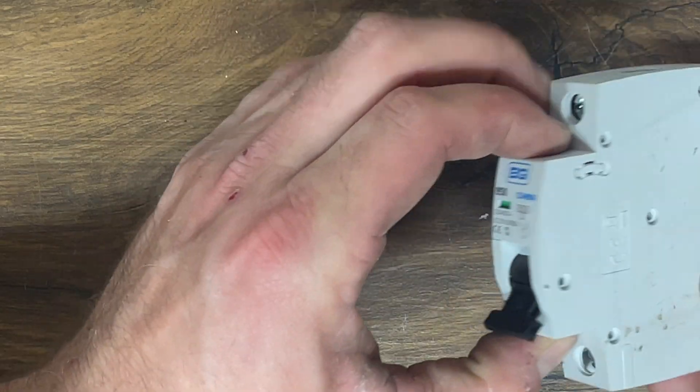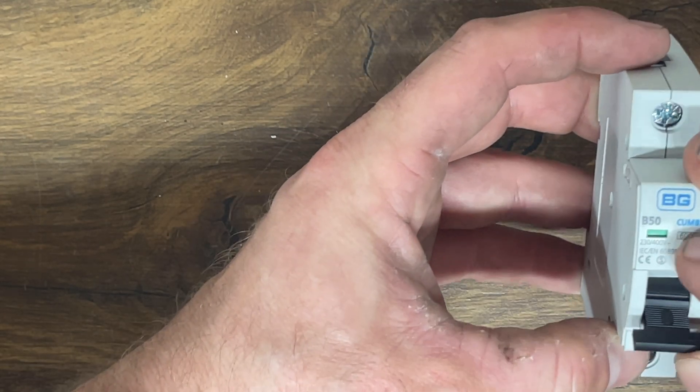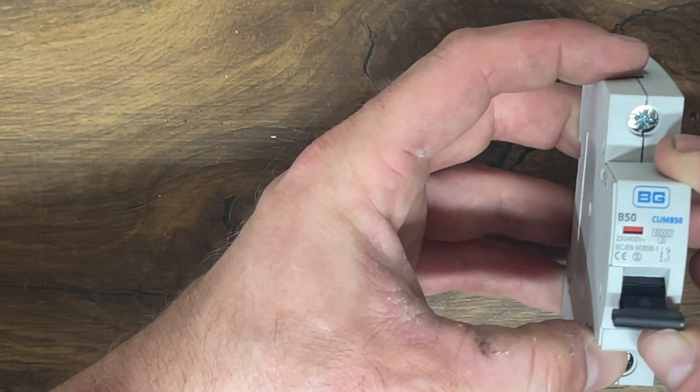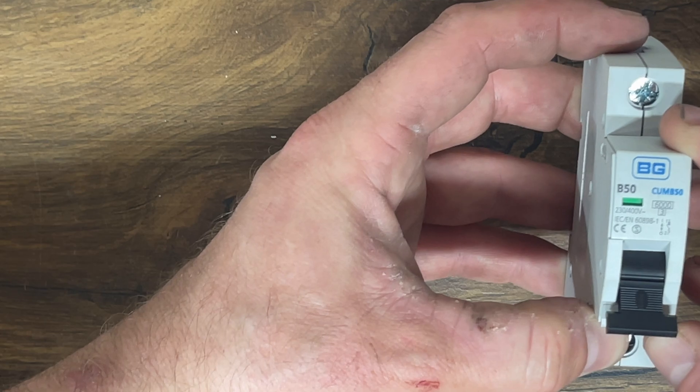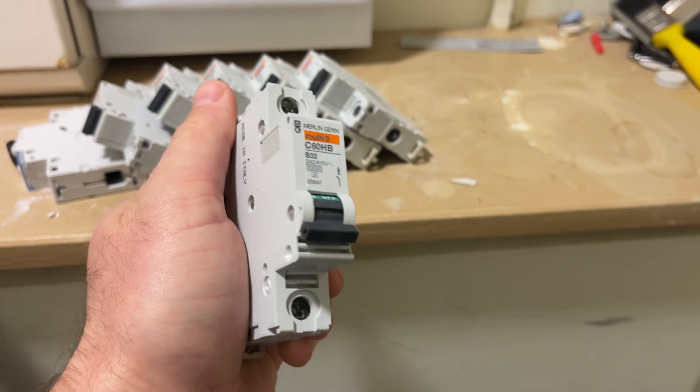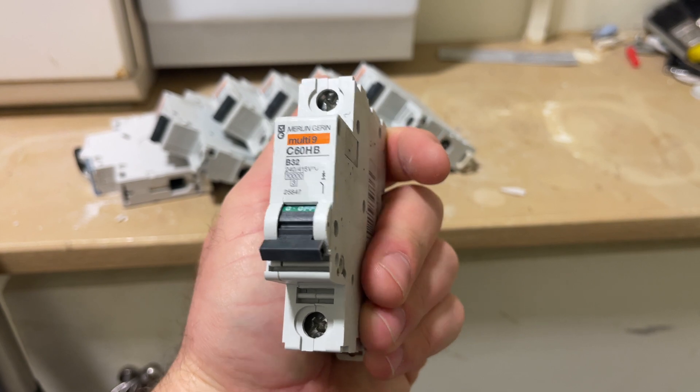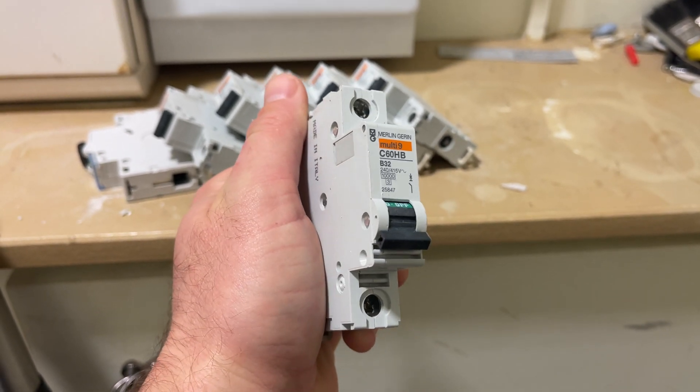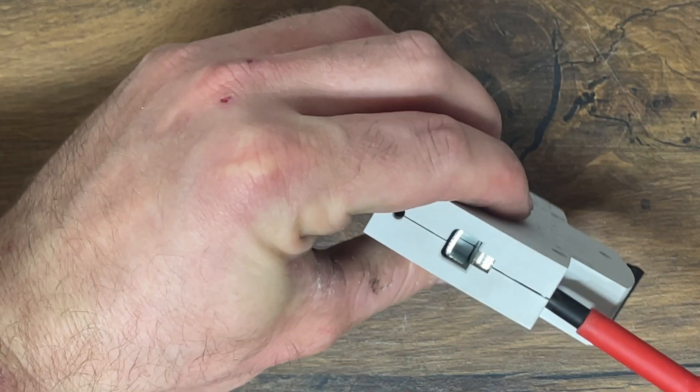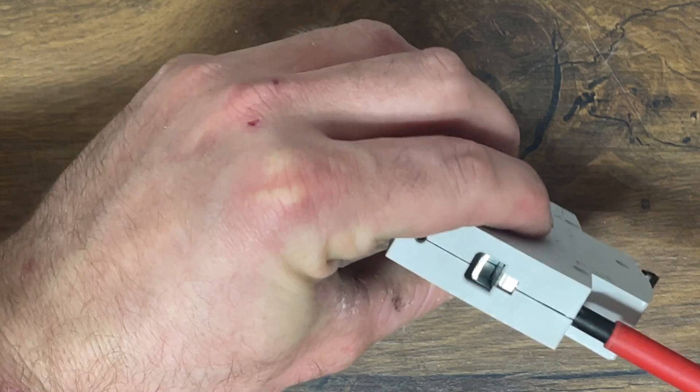If we start off by looking at the outside of our MCB, we have our main toggle switch, which effectively isolates and connects the supply. This is the same toggle that drops down in the event of the MCB operating. We've got a little indicator there to tell us whether it's open or closed.